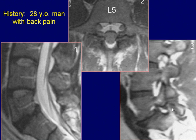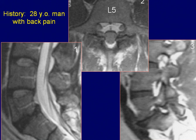The L5-S1 intervertebral foramen has a horizontal and bilobed configuration. MR findings are consistent with bilateral spondylolysis with grade 1 spondylolisthesis at L5-S1.